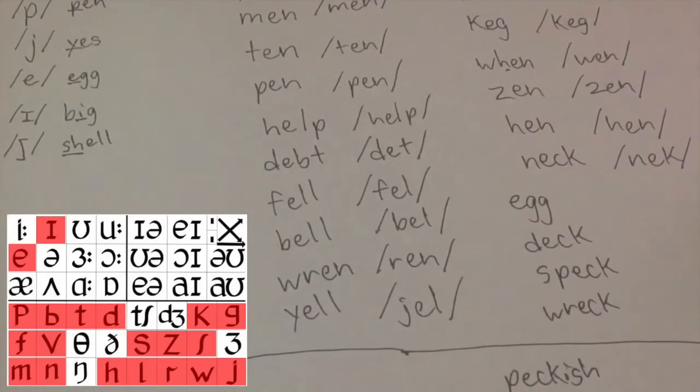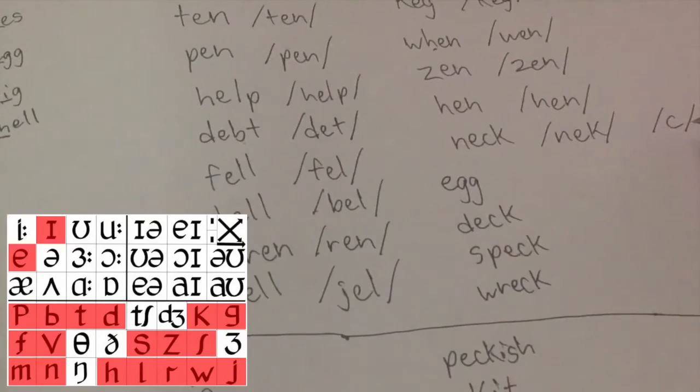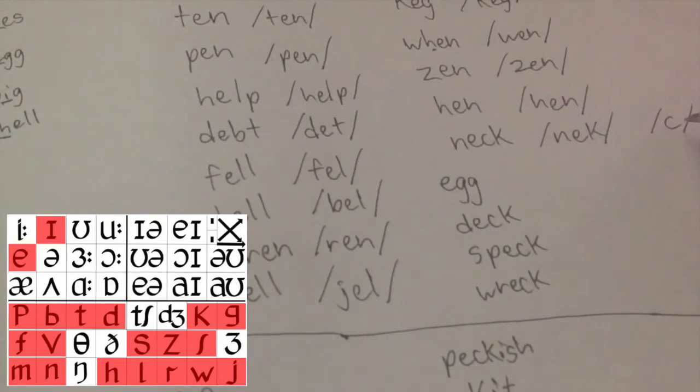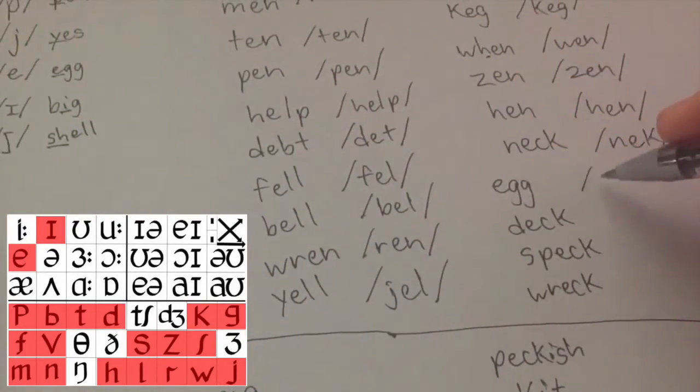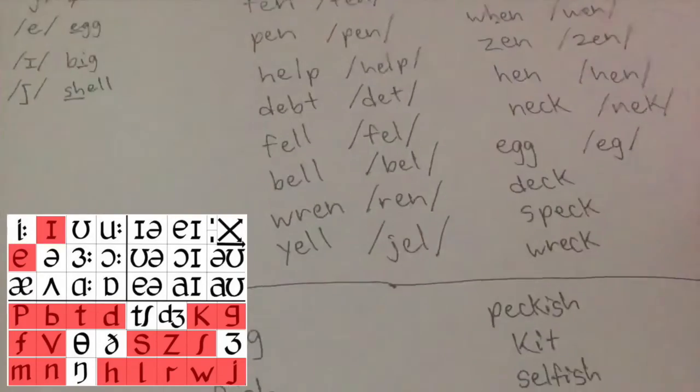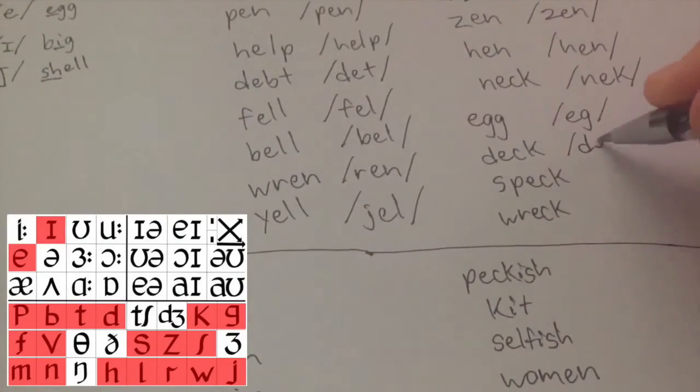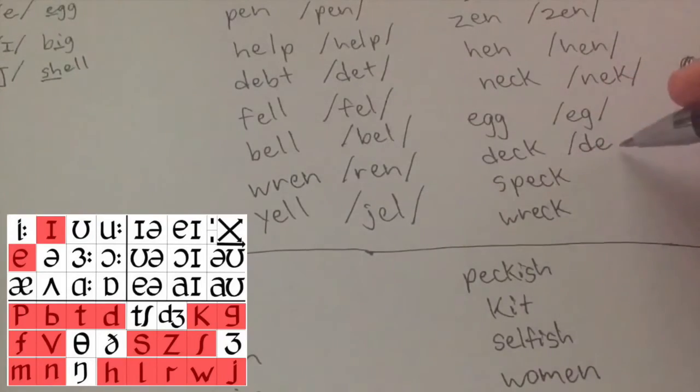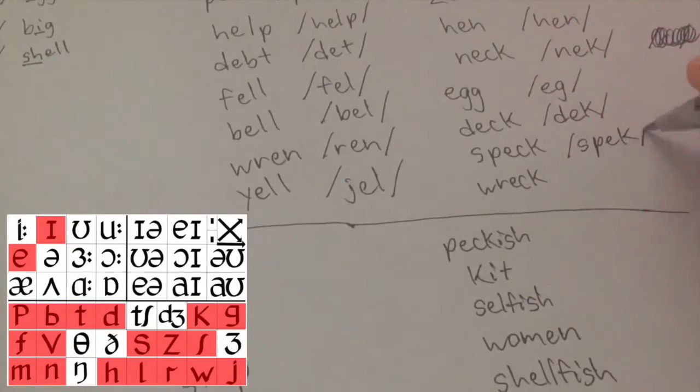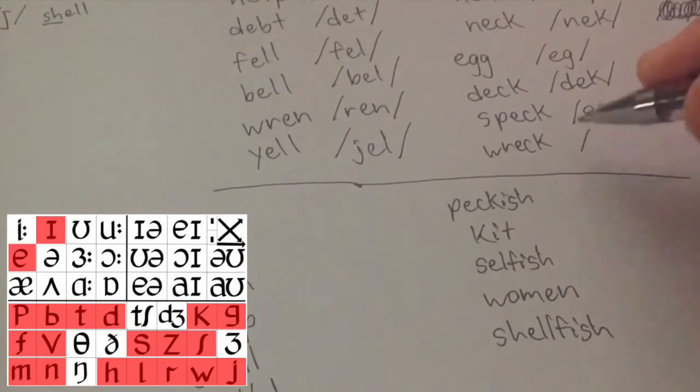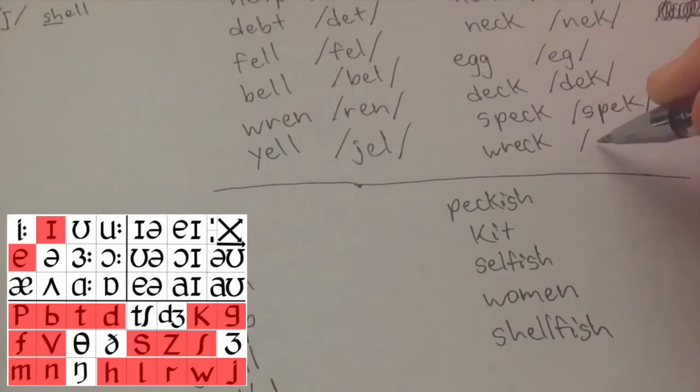This is not a phoneme in English, so don't write that ever. If you hear a sound, the sound is always this. Egg. Don't double up. What's the next one? Deck. Right, looks like a K. Spec. And do you have it? Wreck. Good.